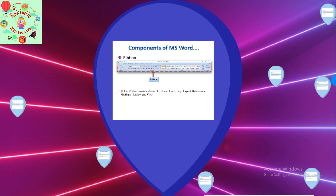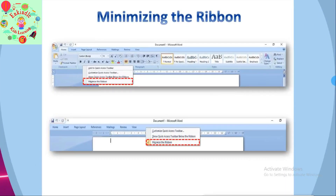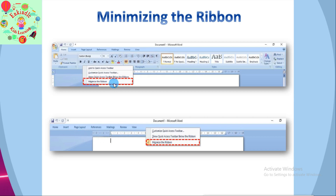Each tab has specific groups of related commands. It gives you quick access to the commonly used commands that you need to complete a task. Let's see how to minimize and maximize the ribbon. When you right-click on the empty space, you can see a drop-down menu. Click on 'Minimize the Ribbon' and your ribbon gets minimized. The tabs are visible but the icons under them are invisible.